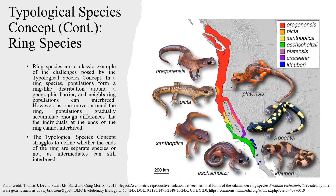In a ring species population — one of the most famous examples of which is shown in the picture on the right — populations form a ring-like distribution around a geographical barrier, and neighboring populations can interbreed. However, as we move around the ring, populations gradually accumulate enough differences that individuals at the ends of the ring cannot interbreed. If you apply the typological species concept to define the diversity seen in these populations, it struggles to determine whether the ends of the ring are separate species or not, since intermediate populations can still interbreed.